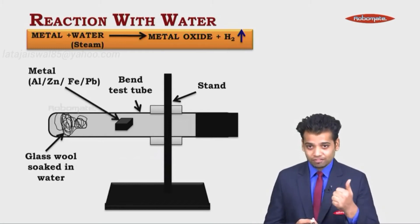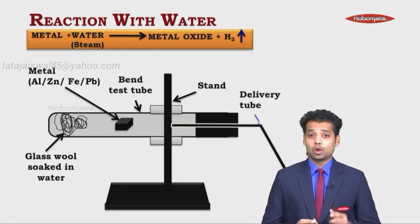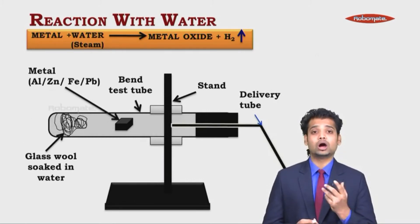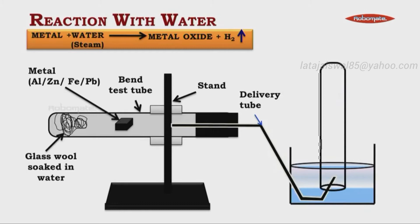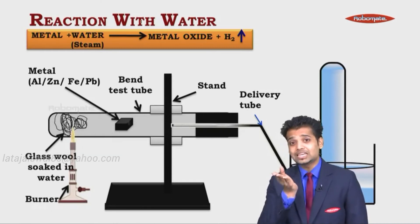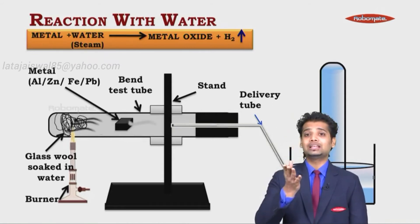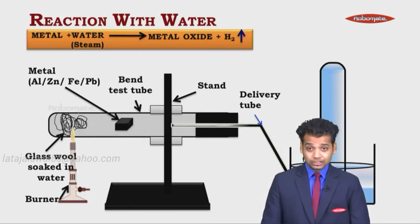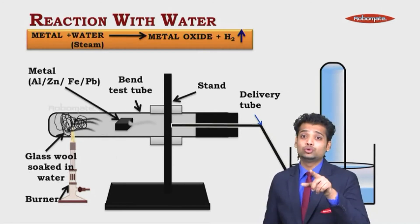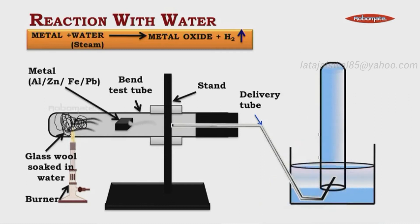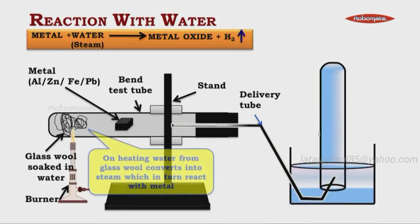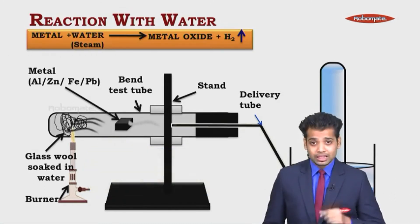The metal can be anything, right from aluminum to lead. So when you heat it, we are going to use a delivery tube into a jar. Now into a jar and I am going to invert a glass of water in it. Now the test tube filled with water. Why do I do so? You will understand in a few seconds. Now when the burner starts, what is going to happen is the steam from the glass wool is going to evaporate. The water is going to evaporate into steam or water vapor and it is going to react with the metal. When it does so, a lot of hydrogen gas is going to be released and it is going to exit from the delivery tube.